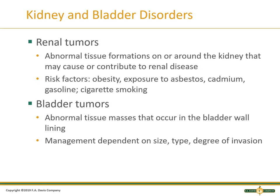Renal tumors are abnormal tissue formations on or around the kidneys that may cause or contribute to renal disease. They can be malignant or non-malignant. Risk factors include exposures, smoking, and obesity. Once you've identified a renal tumor — whether as an incidental finding on imaging — you are referring the patient out to a specialist.